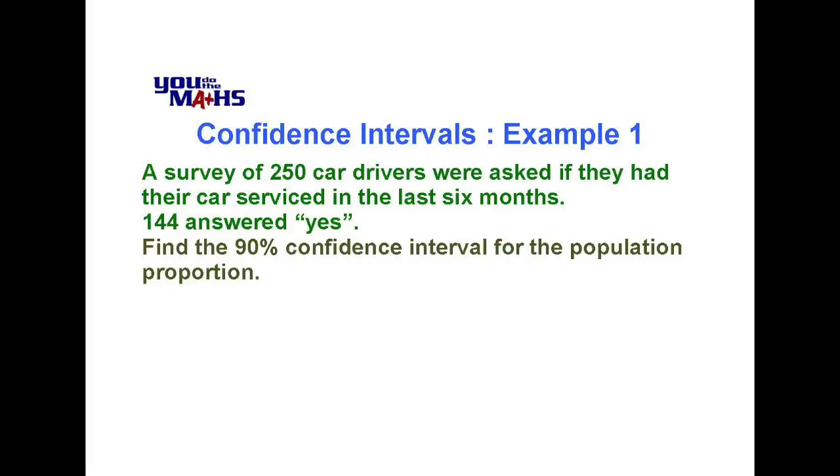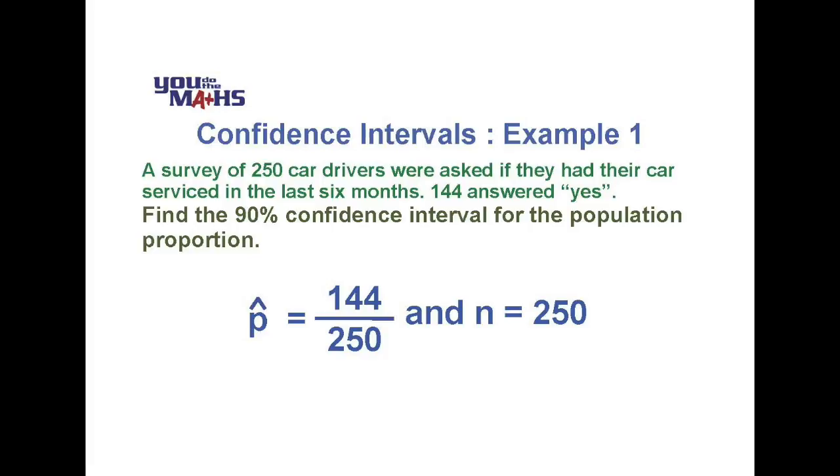Let's start by setting up our normal distribution. We know we need a p and an n value. In this case we don't actually have the population proportion so we'll use our estimate based on our sample proportion p hat. We know that p hat equals 144 out of 250, that's the number of drivers who said they had their car serviced, and we know that n, the sample size, is 250.